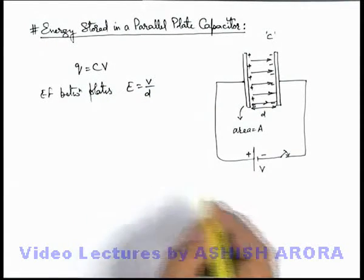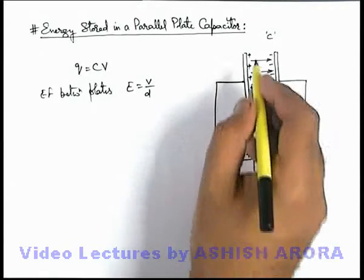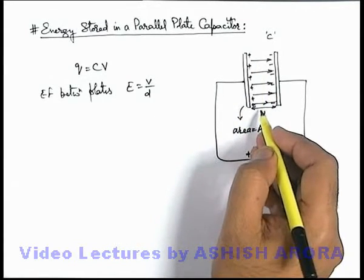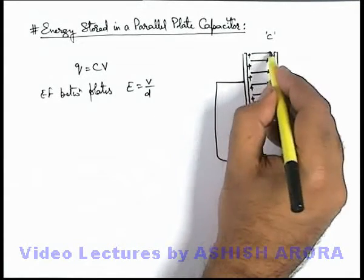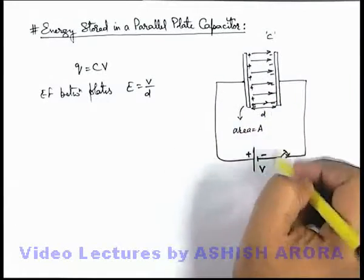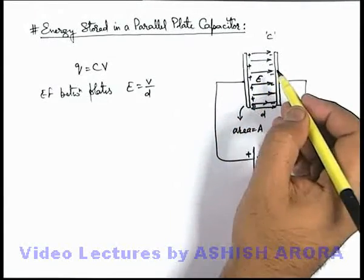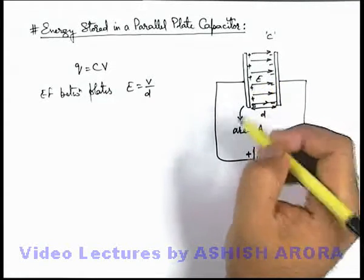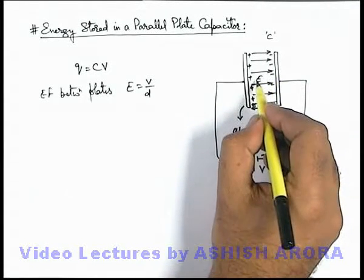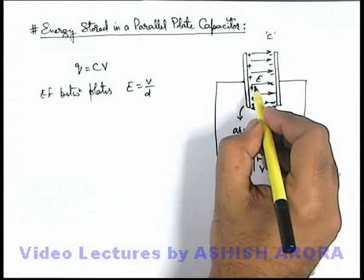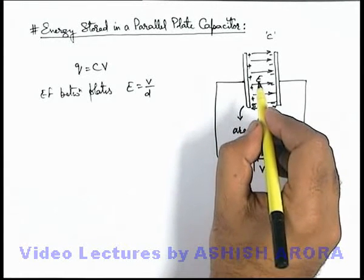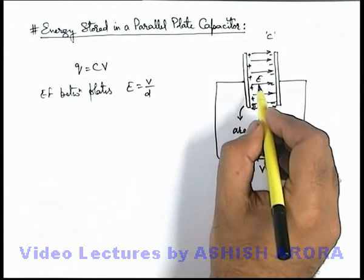Now in this situation, before charging of capacitor there was no electric field, that means there was no field energy in existence between the plates. But after complete charging there exists an electric field E. We already studied in the previous topic that whenever there exists an electric field E, there also exists an electrostatic field energy in the region.